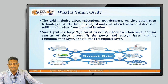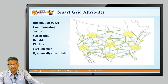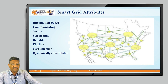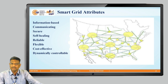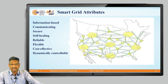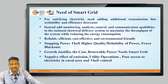All electrically operated machineries and industries are covered within the smart grid. There are a total of eight attributes of a smart grid: information-based communication, secure, self-healing — meaning self-sustaining when a fault occurs — reliable meaning uninterrupted power supply, flexible with switching from one source to another, cost effective, and dynamically controllable for electricity stability.